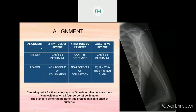For alignment: X-ray tube versus patient cannot be determined because there is no fore-border of collimation. X-ray tube versus cassette also cannot be determined because there is no fore-border of collimation. And cassette versus patient cannot be determined because the patient, IR, and X-ray tube are not aligned to each other. The centering point for this radiograph cannot be determined because there is no evidence of fore-border of collimation. But the standard centering point for this projection is the mid-shaft of humerus.